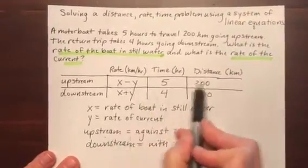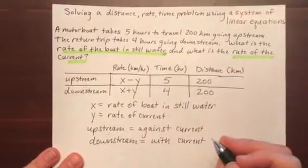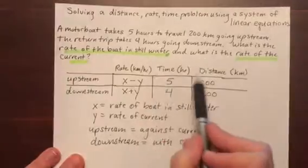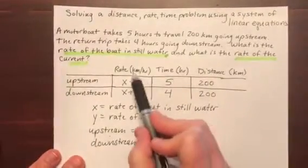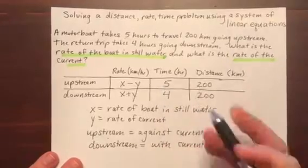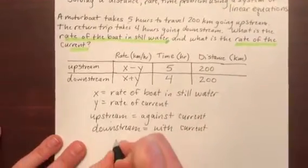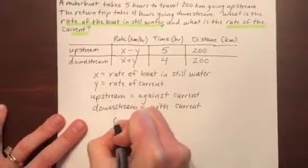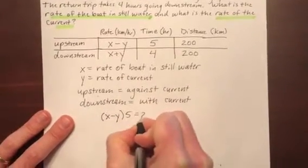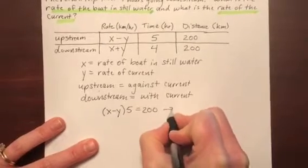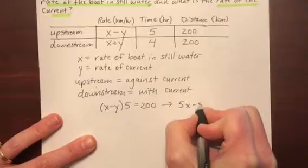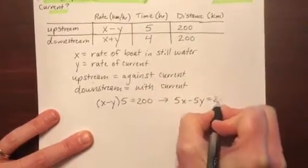We can now use these two lines to make two separate equations. So remember that distance is the same as rate times time. And so when we multiply these together, it should equal the distance. So we have x minus y times five equals 200. Or we can rewrite that using distribution as 5x minus 5y equals 200.